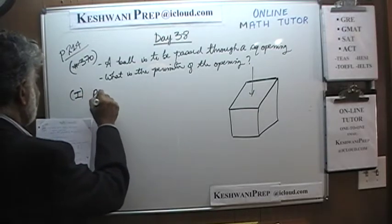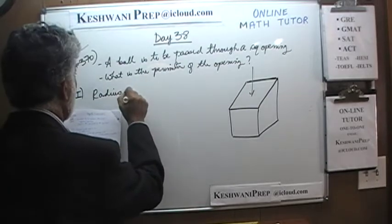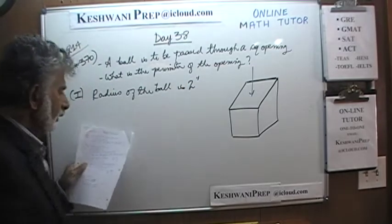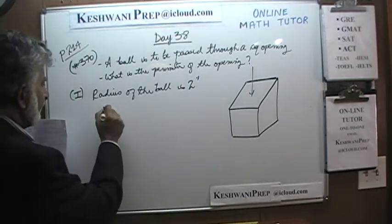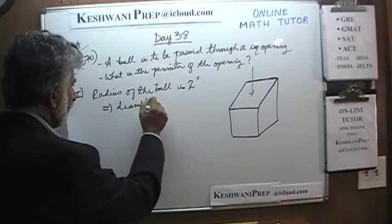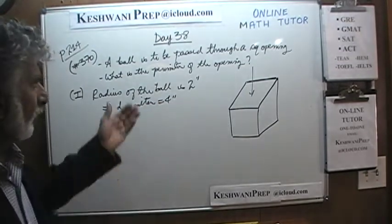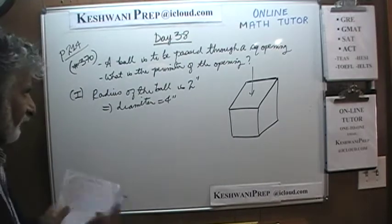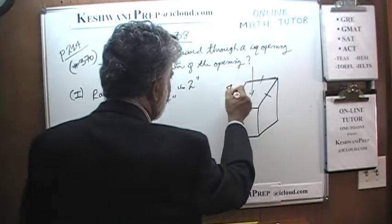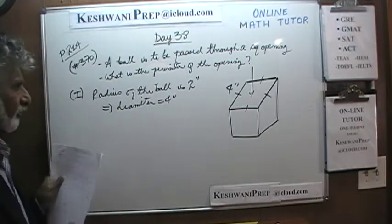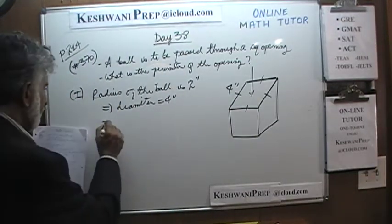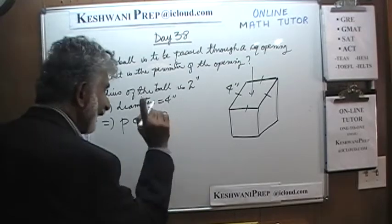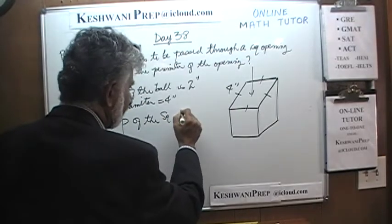Statement 1 tells us that the radius of the ball is 2 inches. Well, if the radius is 2 inches, that implies that the diameter must be 4 inches. And we are told that the ball is passed through the square. So what this tells us is that the perimeter — which is simply these 4 equal sides — now we know they are at least 4 inches. The perimeter of the square has to be at least 16 inches.